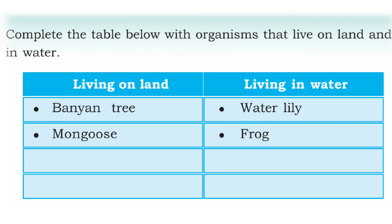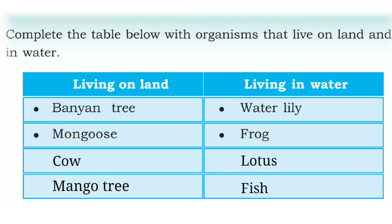Next, we discuss what types of organisms live on land and in water. Examples of organisms living on land are the banyan tree and moose. Examples living in water are water lily and frog. Other organisms on land include grass, different types of trees, goats, and cows. Living in water we have lotus, fishes, and small microorganisms.